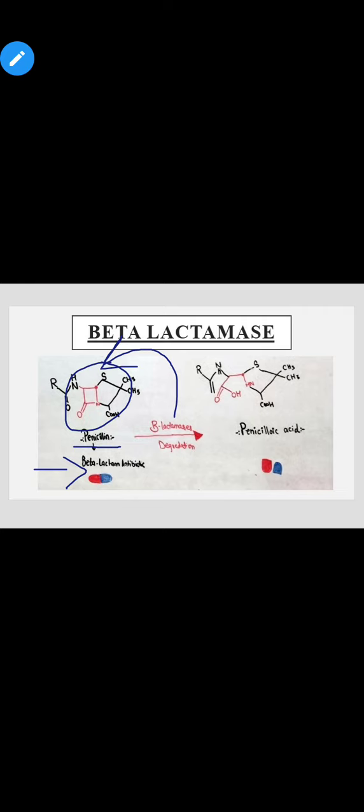اس diagram سے سمجھیں تو یہ ہے penicillin، جو کہ ایک beta-lactam antibiotic ہے۔ اس penicillin کے structure میں آپ کو red color میں ایک 4-atom ring دکھائی دے رہی ہے اور یہ ring beta-lactam ring ہے۔ اگر bacteria کے اندر beta-lactamase enzyme ہو تو وہ اس beta-lactam ring کو hydrolyze اور degrade کر کے open کر دے گا اور penicillin، penicillin acid میں convert ہو جائے گی، یعنی antibiotic degrade ہو جائے گی اور bacteria اس antibiotic سے resistant ہو جائے گا۔